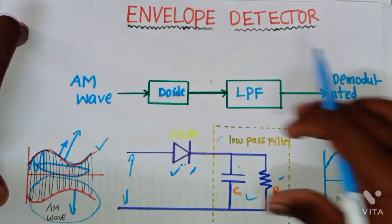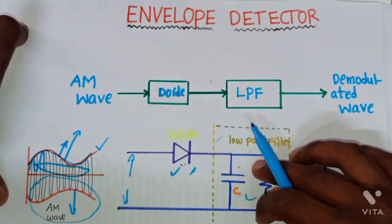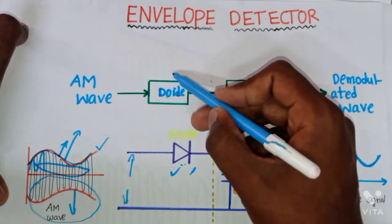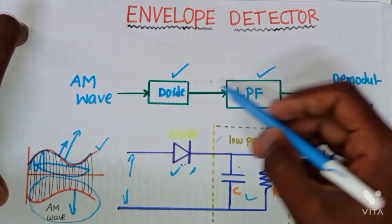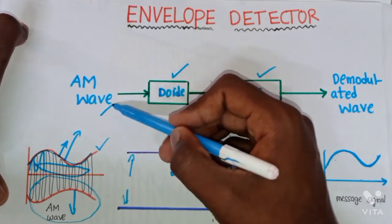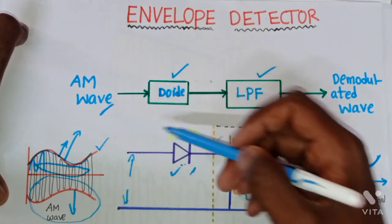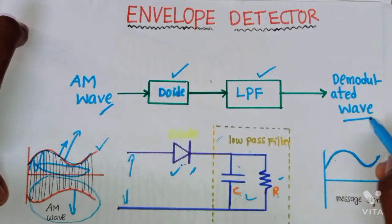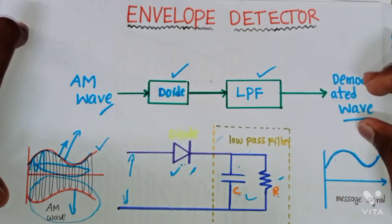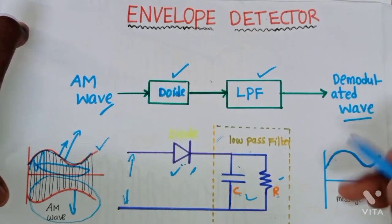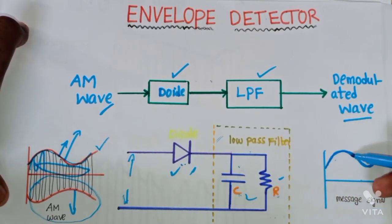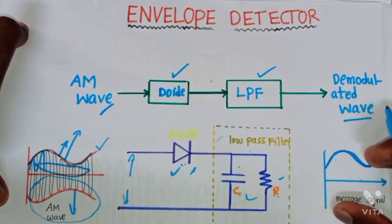This total circuit can be represented as blocks: a diode followed by a low-pass filter. The input to the diode is the AM modulated wave, and the output of the low-pass filter is the demodulated wave — nothing but the message signal.